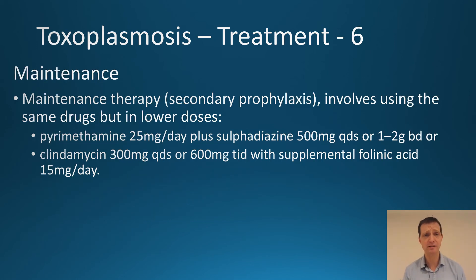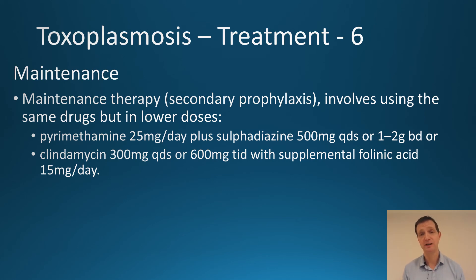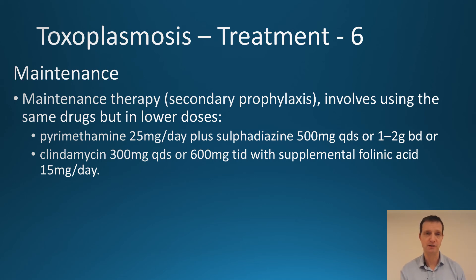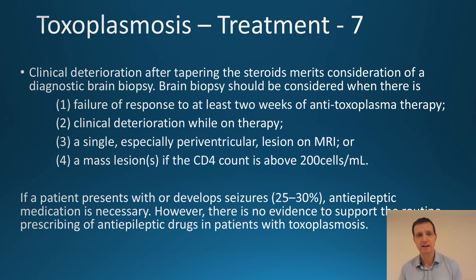In terms of maintenance therapy — secondary prophylaxis after the six weeks of acute therapy — the same drugs are used but at half the dose: pyrimethamine 25 mg per day, plus sulfadiazine 500 mg four times a day or 1 to 2 grams twice a day, or clindamycin 300 mg four times a day or 600 mg three times a day, with supplementary folic acid 50 mg per day. Clinical deterioration after tapering of steroids merits consideration of a diagnostic brain biopsy.